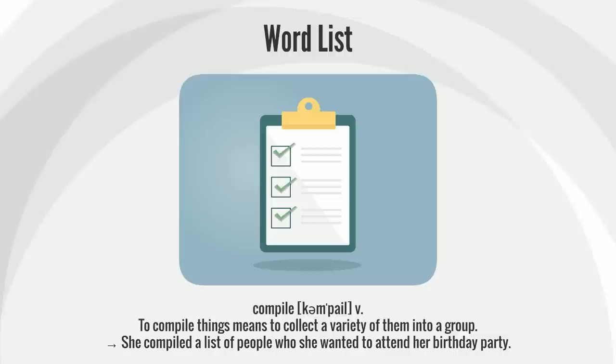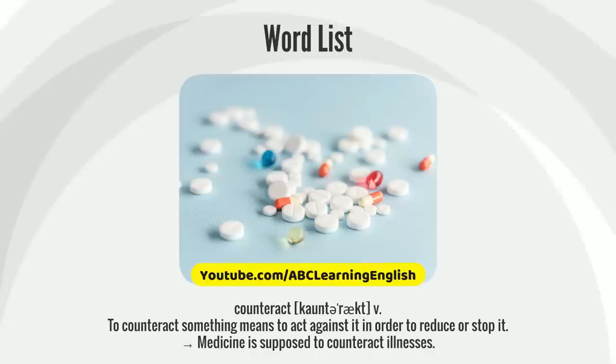To compile things means to collect a variety of them into a group. She compiled a list of people who she wanted to attend her birthday party.